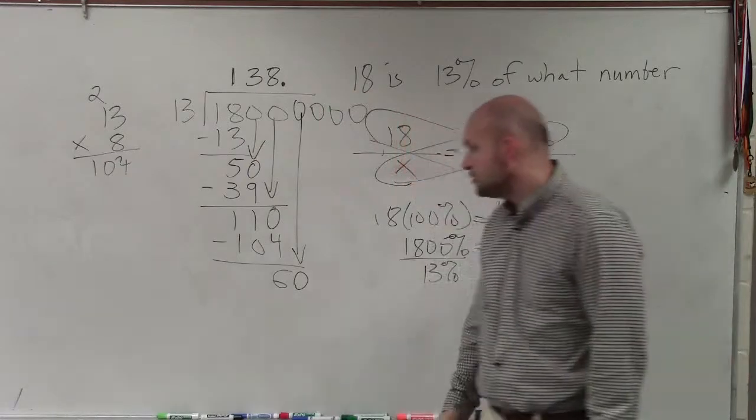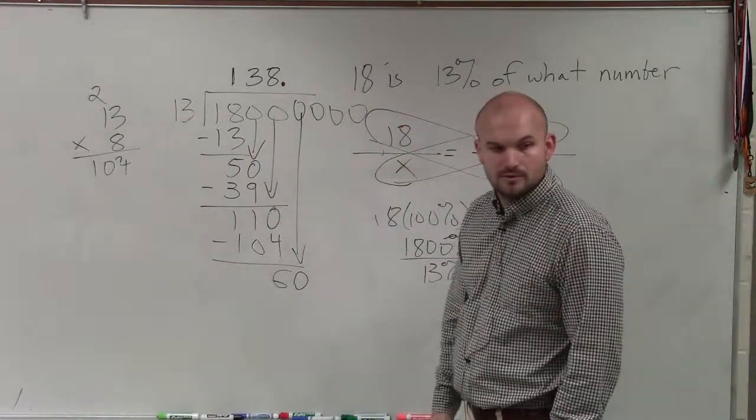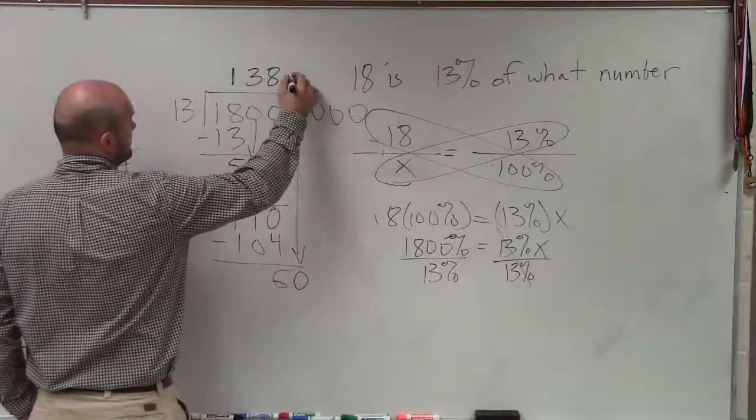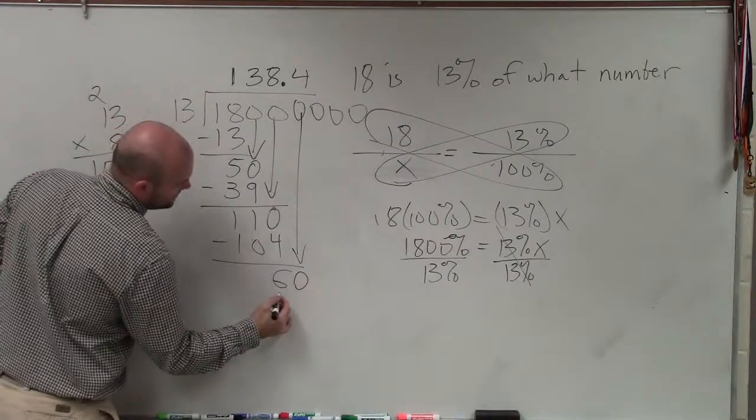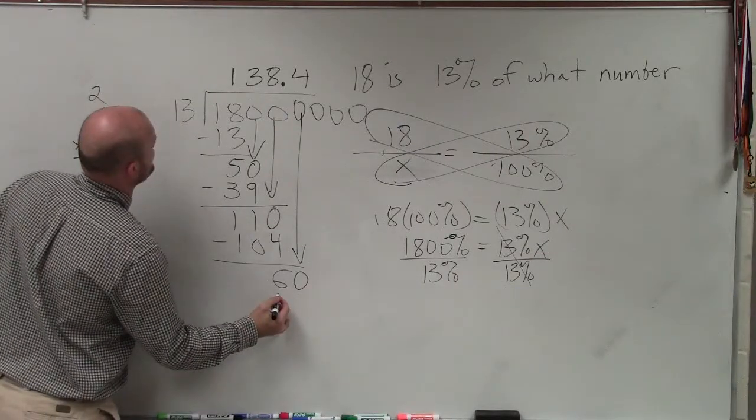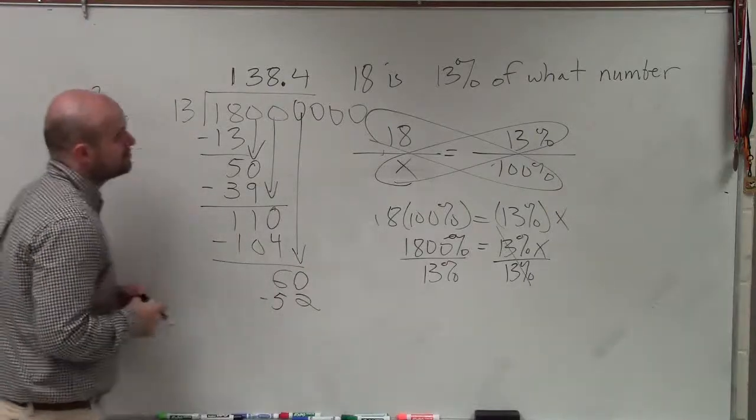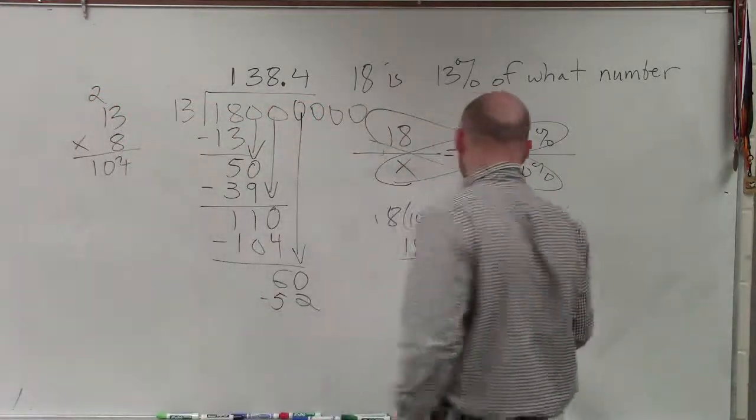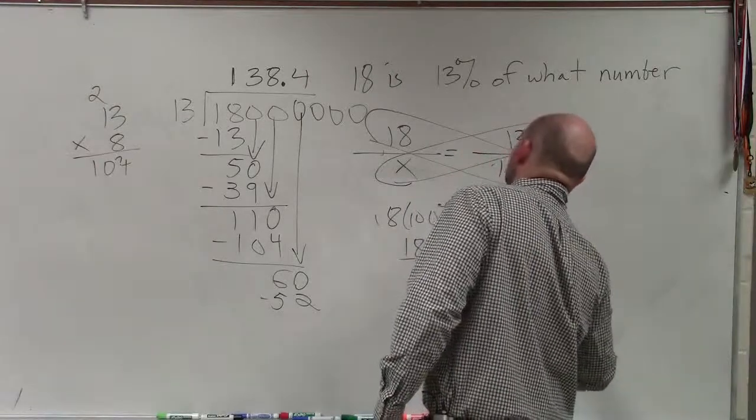And I say 13 goes into 60 four times, which would be 4 times 13 would be 13, 26, 52. And we'll just do one decimal point for here. So x equals 138.4.